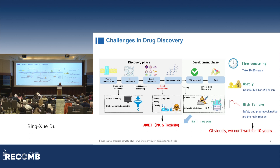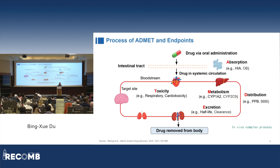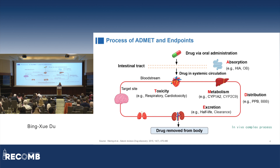PK and toxicity can also be summarized by ADMET. An oral administration is one of the common routes for drug delivery. The drug will be absorbed from the intestinal tract into the bloodstream, then enters the systemic circulation and becomes available for distribution throughout the body. Some drugs may accumulate in certain tissues, leading to higher concentration at target sites. Most drugs undergo metabolism and excretion to facilitate their elimination through the liver and kidneys. They can also cause toxicity at most stages. The whole process is absorption, distribution, metabolism, excretion, and toxicity.